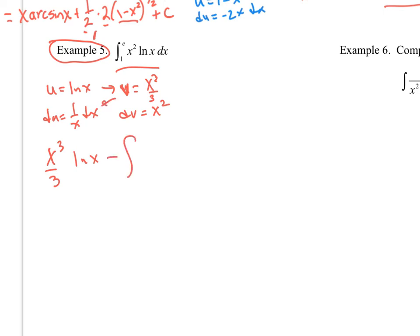I go across, x cubed over 3 ln x minus, go down, cross, and I'm going to get x cubed over 3 times 1 over x dx. That's kind of nice. Things simplify a little bit. This is x squared over 3 dx. This stays the same. I take that antiderivative, that's going to be x to the third over 9 plus c. It's a minus, so it's x cubed over 3 ln x.